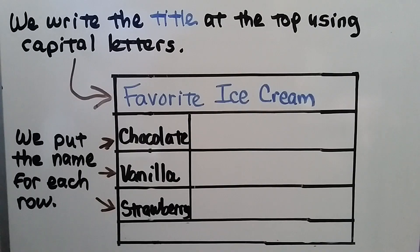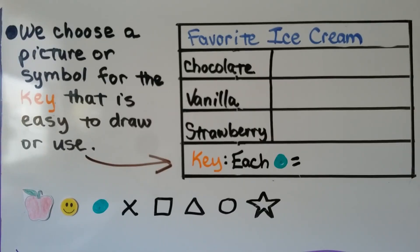We choose a picture or symbol for the key that is easy to draw or use. I'm going to use green dots when I make my picture graph, but you could use any of these symbols or pictures or come up with ones of your own.